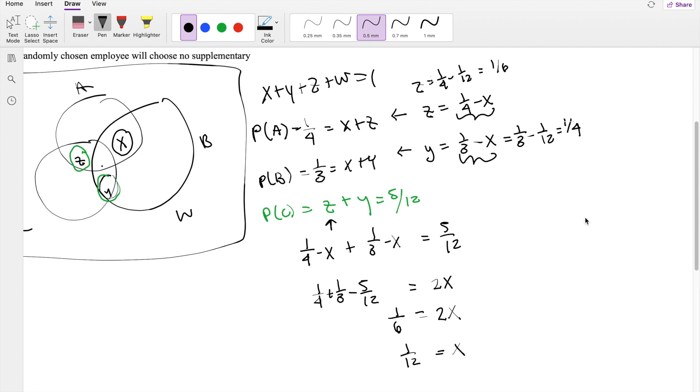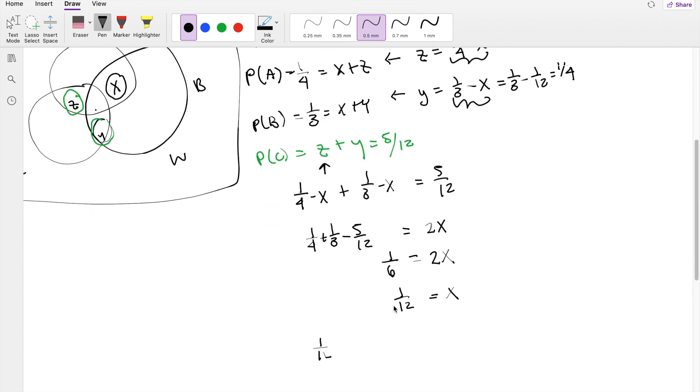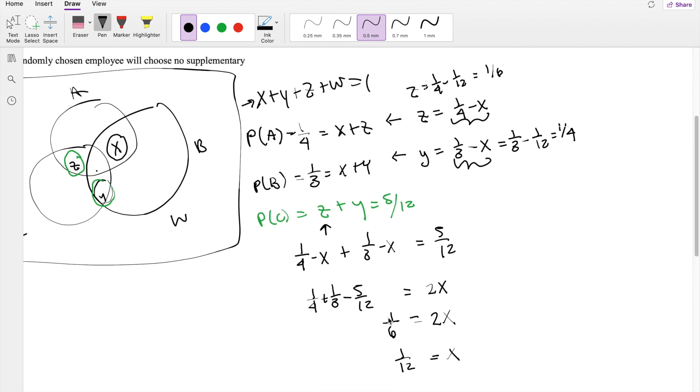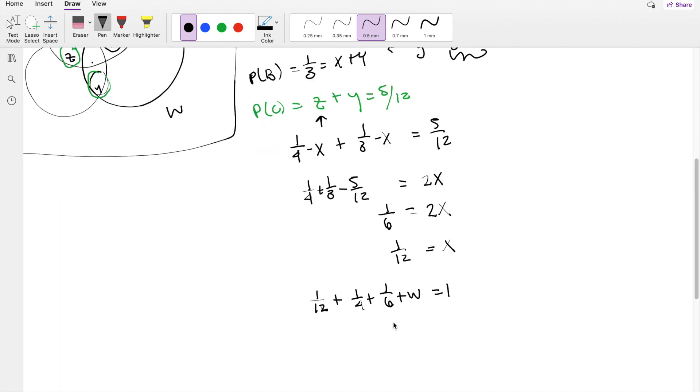Now we have all the ingredients we need. So X is one-twelfth. Plugging everything in here. X is one-twelfth plus Y is one-fourth plus Z is one-sixth plus W is equal to one. So W plus one-half equals one. So W must be equal to one-half.